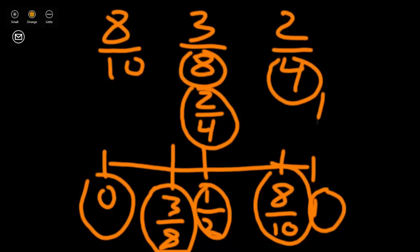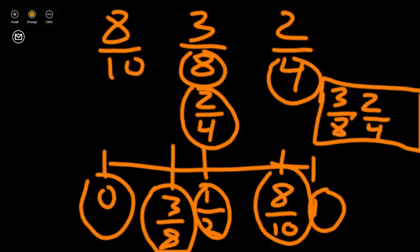To write that in a neater way for a test, we could list them after showing our work on our number line: 3 eighths, 2 fourths, and 8 tenths.